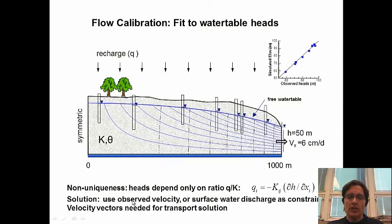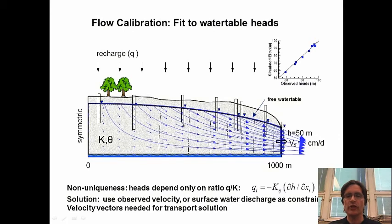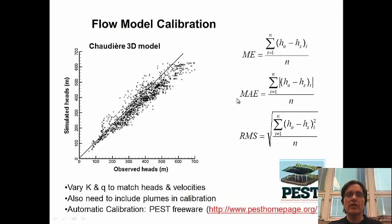To make the solution unique, we use some other data — for instance, observed velocity or surface water discharge as a constraint. If we know the velocity is say six centimeters per day, that constrains both Q and K. We'll only get this velocity and this water table simultaneously for a specific value of Q and a specific value of K. These are the velocities we're interested in transferring to our contaminant transport model. Here's an example of a whole watershed study with thousands of data points — observed heads versus simulated heads — where we can calculate the mean error, mean absolute error, or root mean squared error, and aim to minimize the standard deviation.